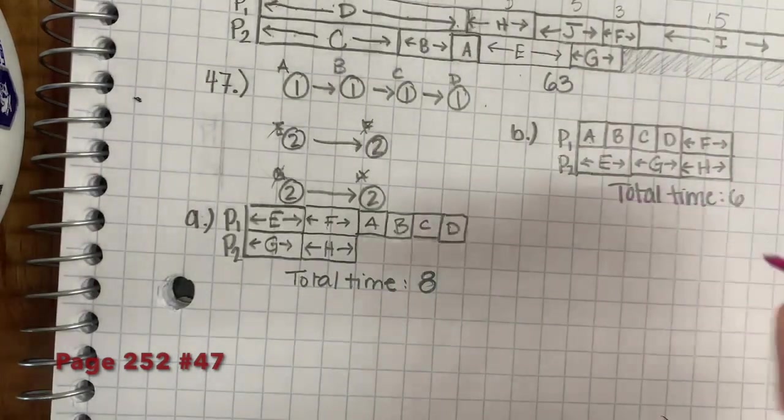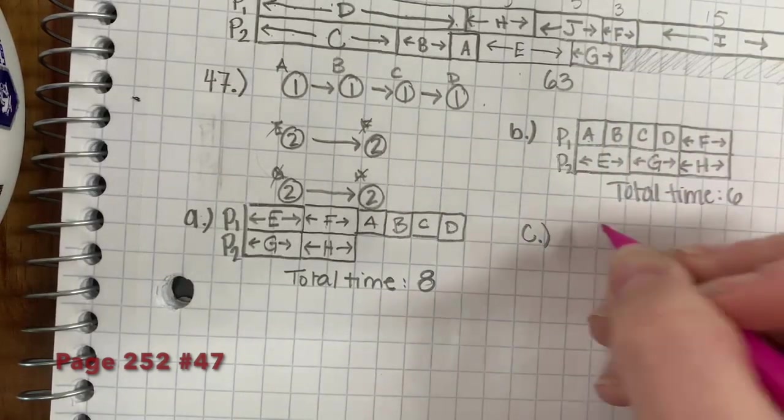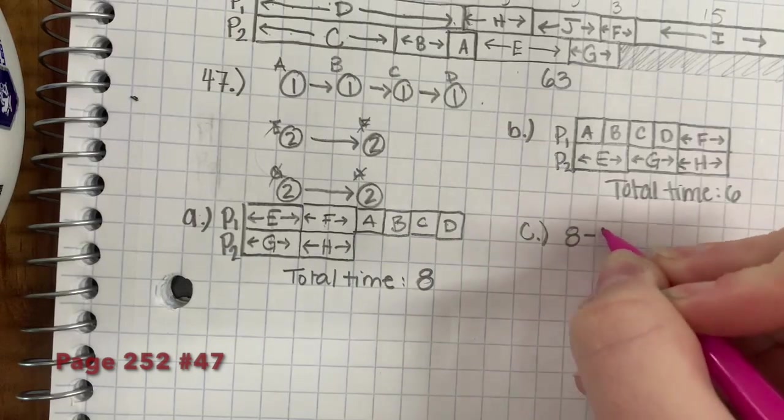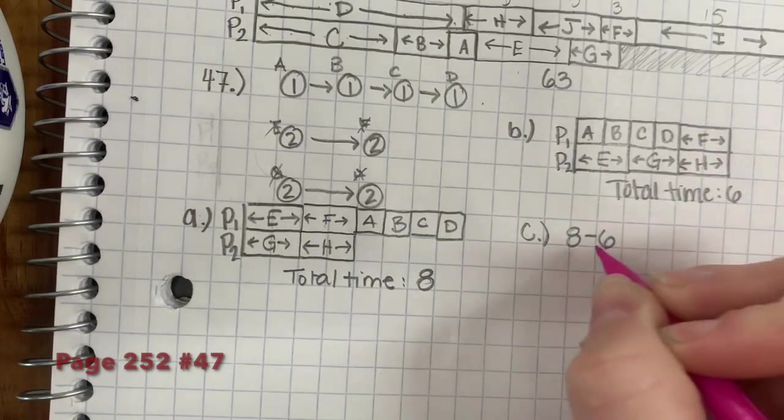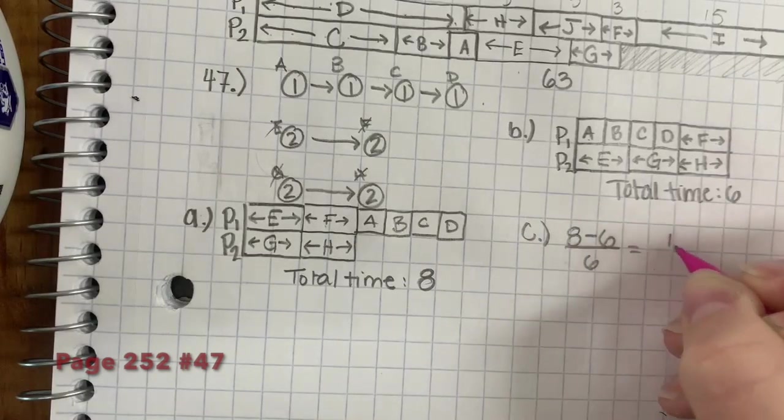For C, we take 8 minus 6, divide it by 6. And we get 1 third.